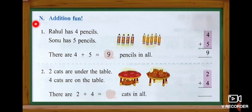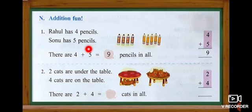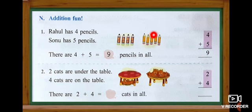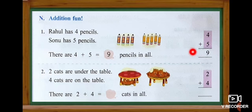We are going to do some more problems. Addition — number one. Rahul has four pencils and Sonu has five pencils. Totally how many pencils? Rahul has four pencils and Sonu has five pencils. Four plus five: one, two, three, four, five, six, seven, eight, nine. We get number nine. Totally nine pencils.